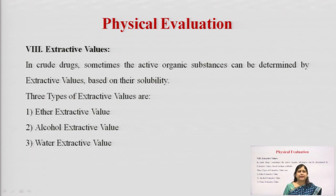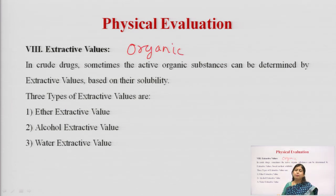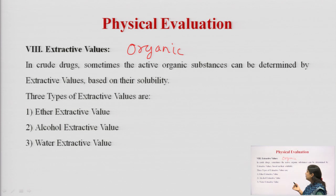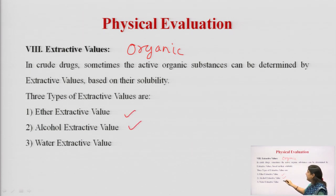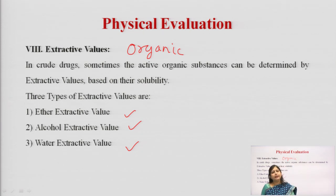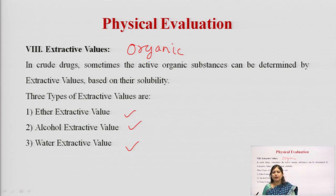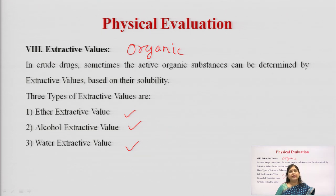The next point is extractive value — done for the organic substances. Now that we know the inorganic part, what is left is the organic part, which contains different hydrocarbon derivatives such as sugars, oils, and secondary metabolites like alkaloids and glycosides. We can extract them in different solvents like ether, alcohol, and water depending on their solubility. Oil-soluble substances go in ether, alcohol-soluble go in alcohol, and hydrophilic substances go in water. The total amount of ingredients in different solvents becomes the extractive value.